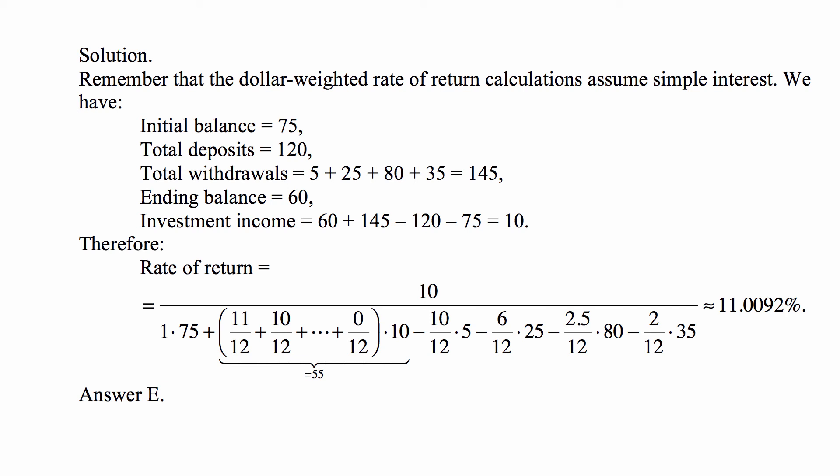For the withdrawals: 5 is withdrawn after 2 months, so it's taken out for 10 out of 12 months. 25 is withdrawn at the end of 6 months, so it's taken out for 6 out of 12 months. 80 is taken out for 2.5 out of 12 months. And 35 is taken out for 2 out of 12 months. All amounts taken out carry minus signs; all money put in carries plus signs. Doing the calculation, the result is approximately 11.0092%, which is answer E.